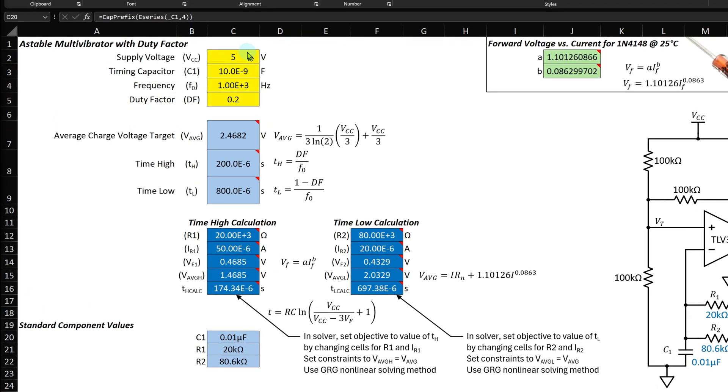Here's an introduction to the spreadsheet. The inputs are here at the top. The supply voltage I entered was 5 volts. I'm using a 10 nF capacitor and the frequency of 1000 Hz and a duty factor of 0.2. Here's the calculation of the average charge voltage. This will be used to set the constraint in the solver. The time high and time low are calculated based on the frequency.